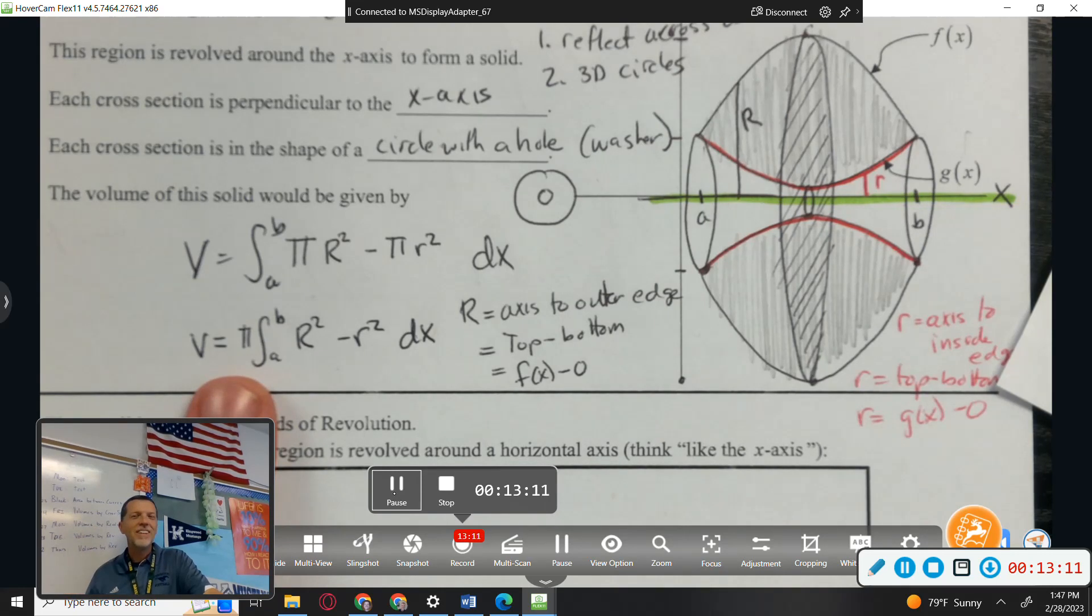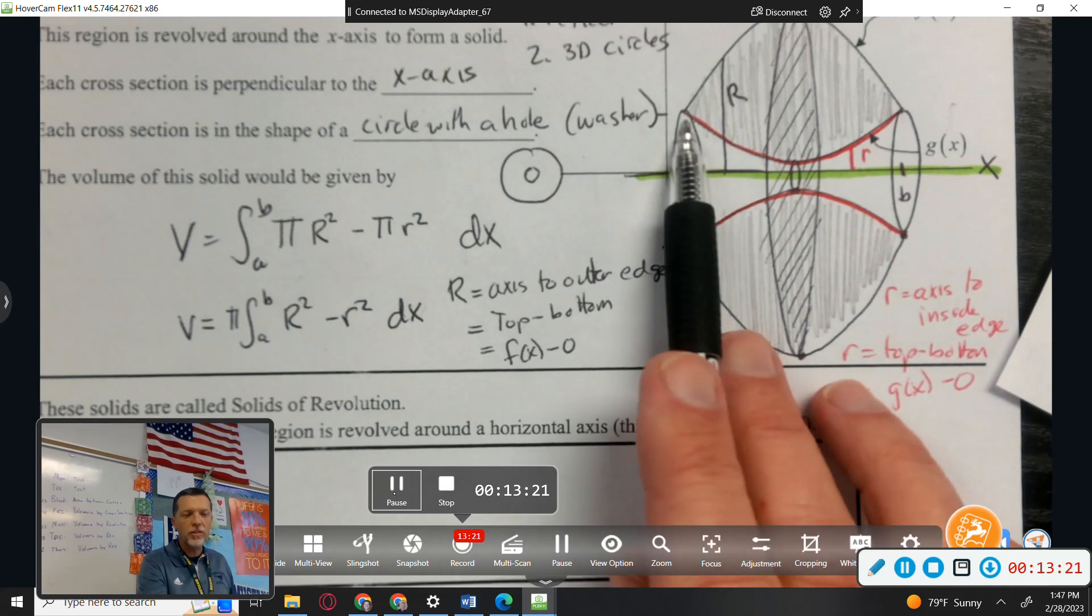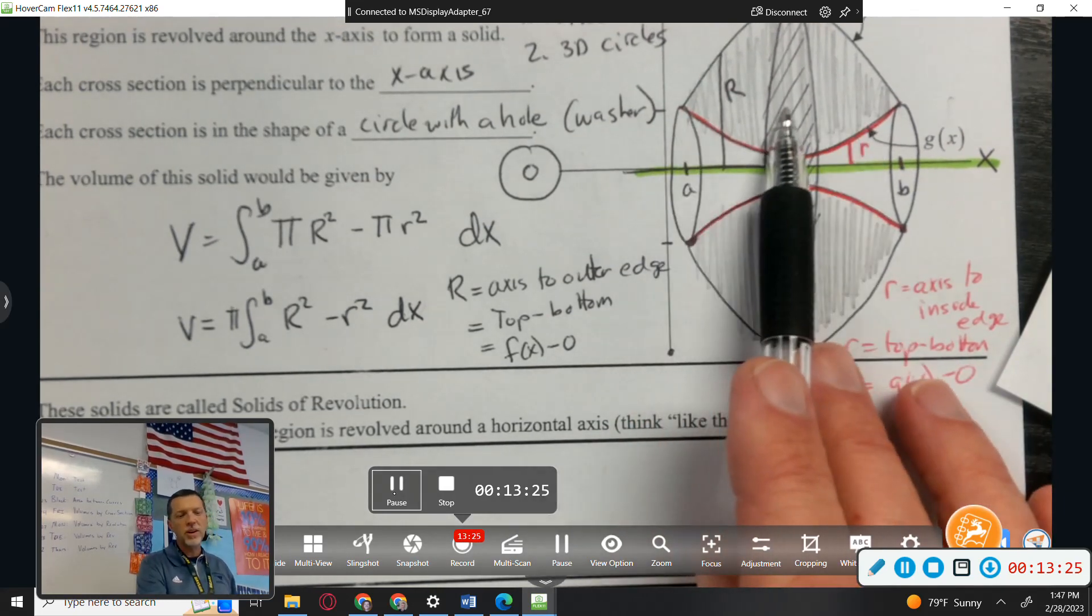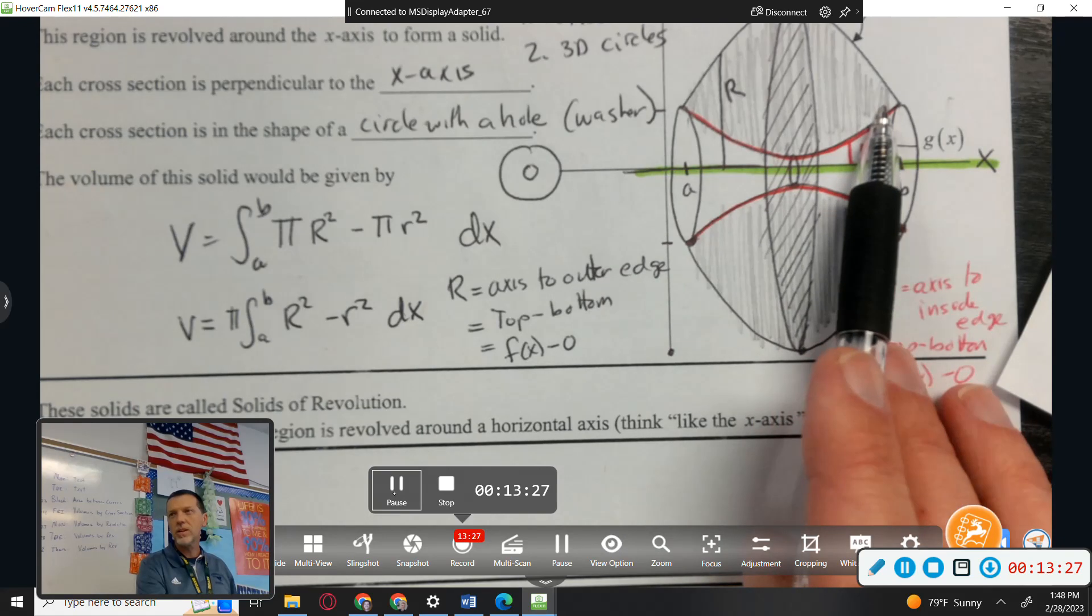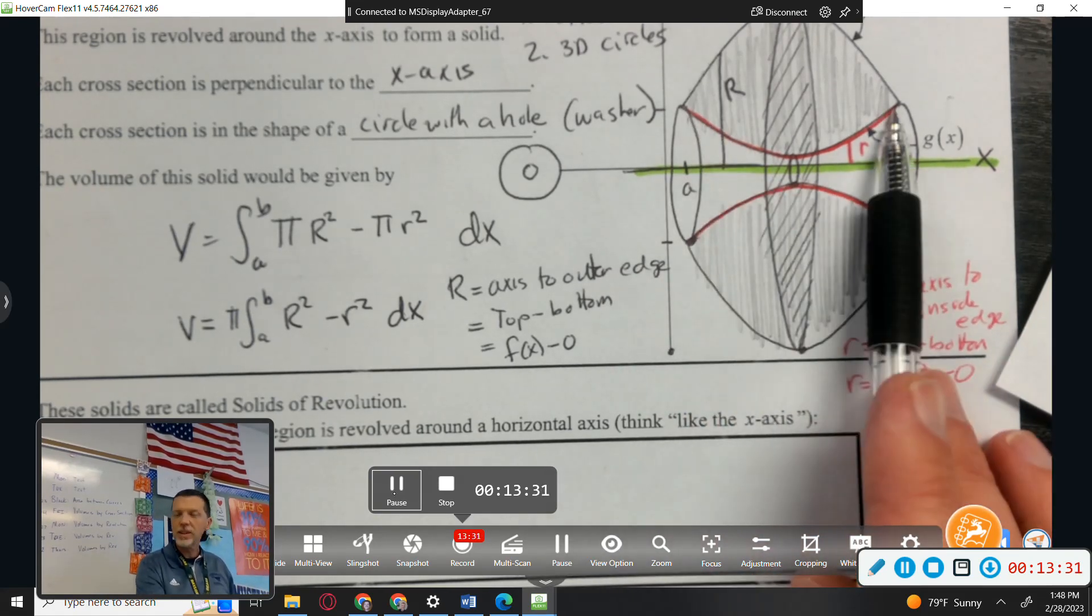Is the value of the big R and the little R going to vary depending on where you pick? Yes, that's why big R is a function of x. Wherever you go in x, big R is changing. It gets bigger, bigger, bigger, and then it gets smaller, smaller, smaller. Same with little R. Although, it starts big, gets small, and then gets bigger.